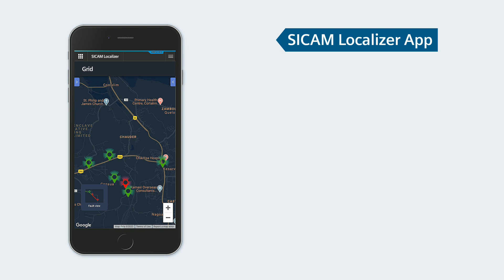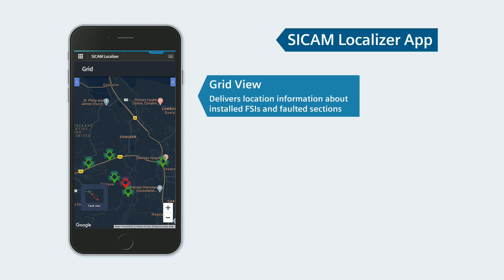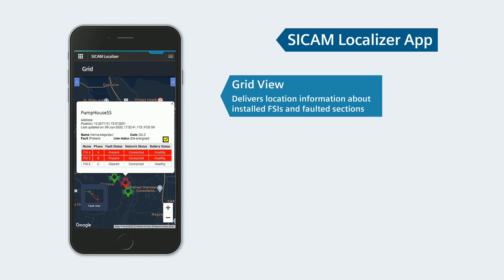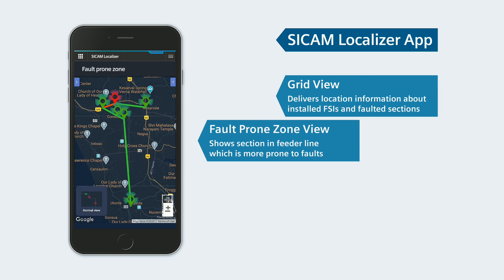With the CCAM localizer app, the service personnel gets precise location information about the installed FSIs and the faulted sections presented in the grid view. With the fault-prone zone view, you can identify the section in the feeder line which is more prone to faults.